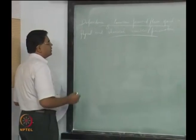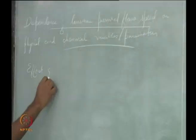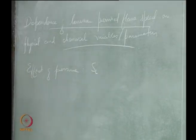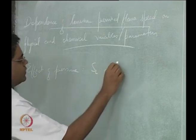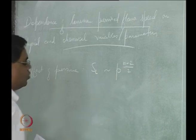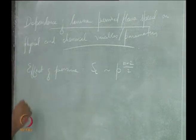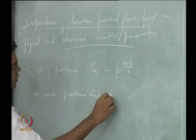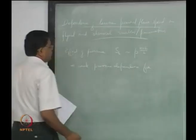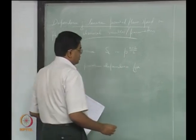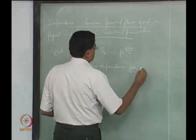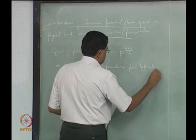In the last class we were looking at the effect of pressure on the flame speed, and what we found was: for an nth order reaction — for a global reaction — the flame speed goes as p to the (n-2)/2. This basically gives a weak pressure dependence for typical hydrocarbon oxidation combustion reactions with a global order close to 2, so for typically second order reactions.